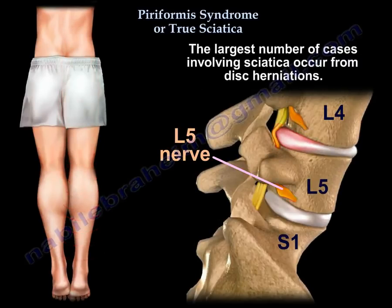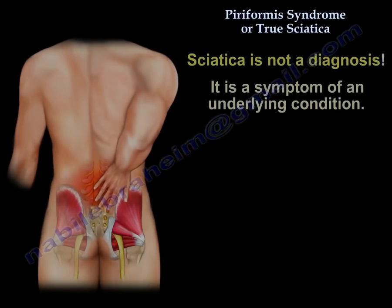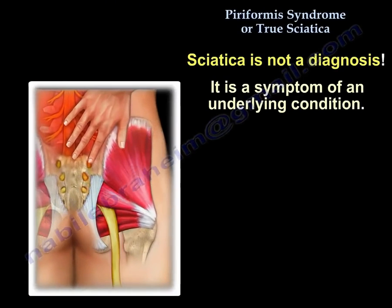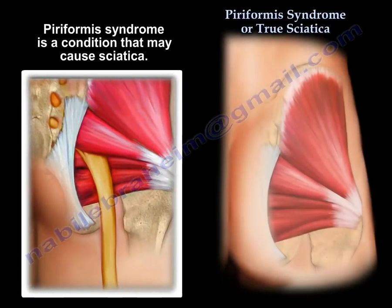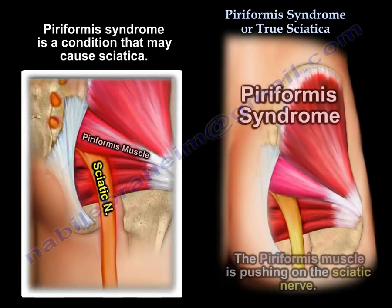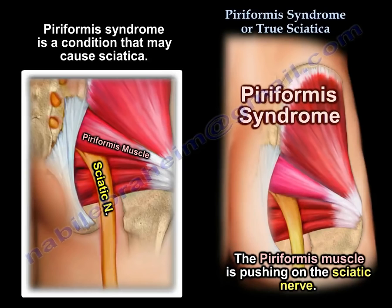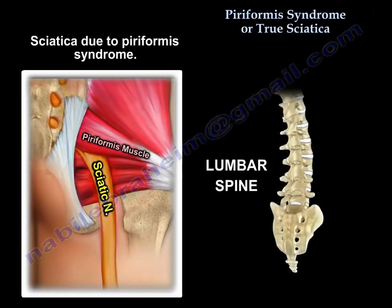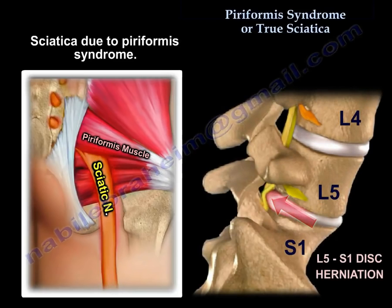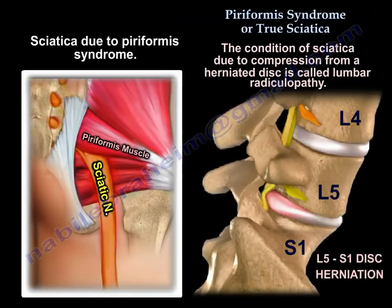The largest number of sciatica cases occur from disc herniation. Sciatica is not a diagnosis — it is a symptom of an underlying condition. For example, in piriformis syndrome you can have sciatica due to the piriformis muscle pushing on the nerve, so the condition is called piriformis syndrome. But if the sciatica comes from a herniated disc, then we call the condition lumbar radiculopathy.